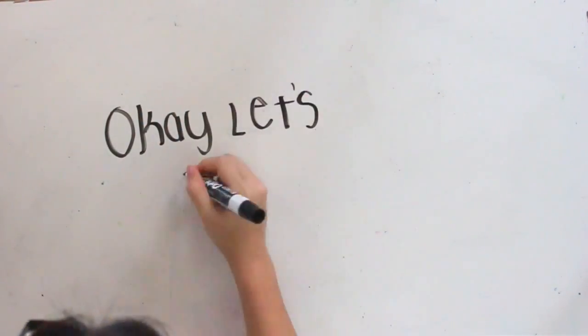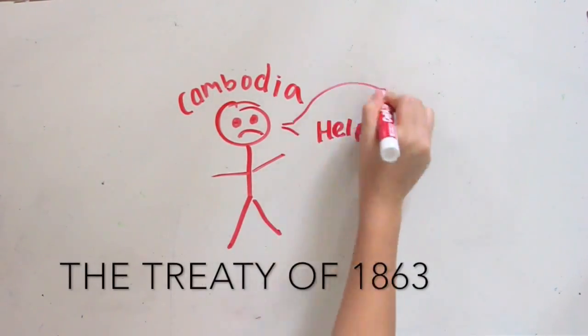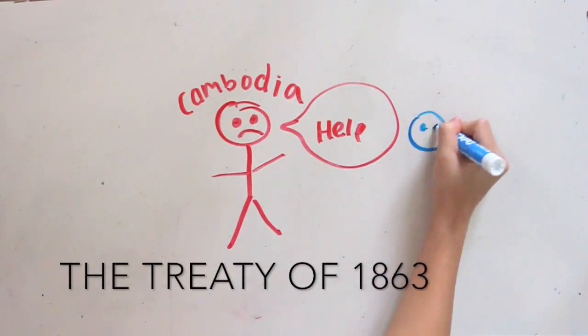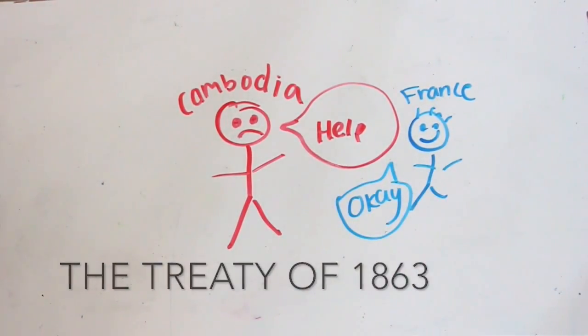Okay, now we can begin. Due to the threat from its neighboring countries, King Norodom, the reigning king during that time, requested a French protectorate, which became known as the Treaty of 1863.